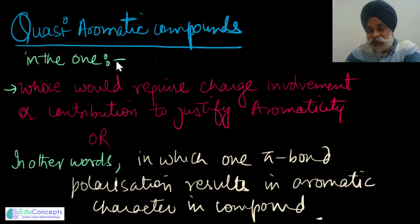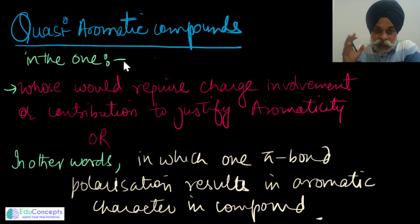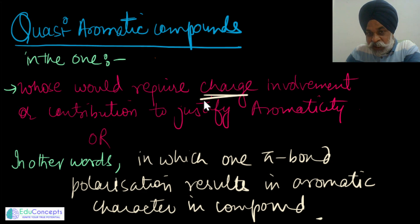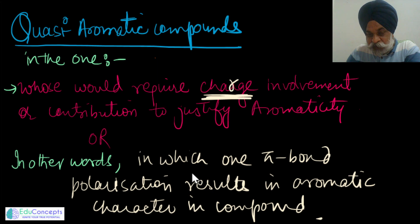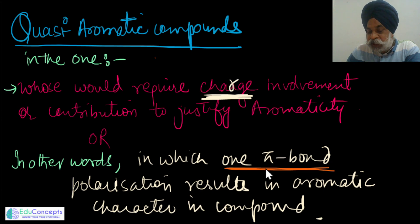In my language, a quasi-aromatic compound is essentially an aromatic compound but in the ionic form. Quasi-aromatic compounds are aromatic but they show aromaticity when they are in the ionic form, and when in ionic form, there is charge involvement. In other words, quasi-aromatic compounds are those where one of the pi bonds of the structure, when undergone polarization, results in an aromatic character.